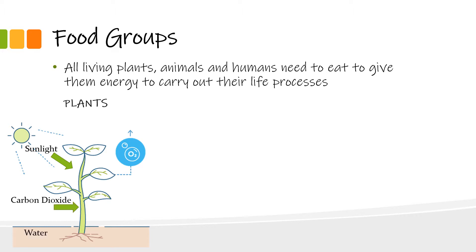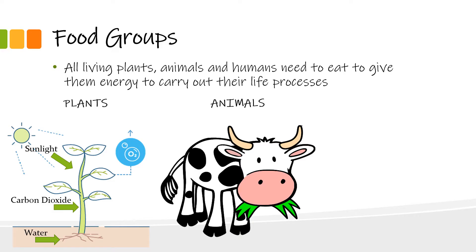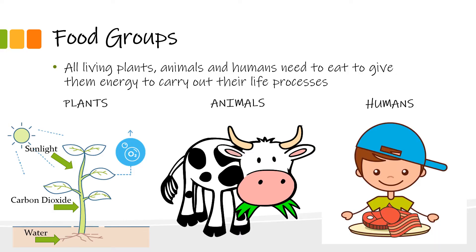as well as the water that they get from their roots. This is called the process of photosynthesis. Next we look at animals — animals cannot make their own food and need to eat plants or other animals to get their energy.